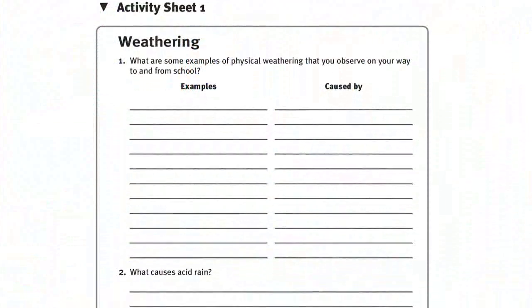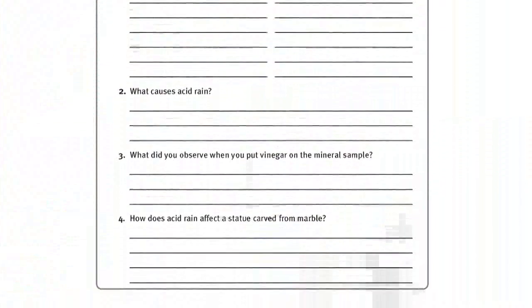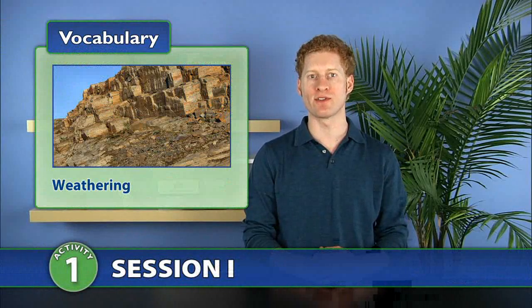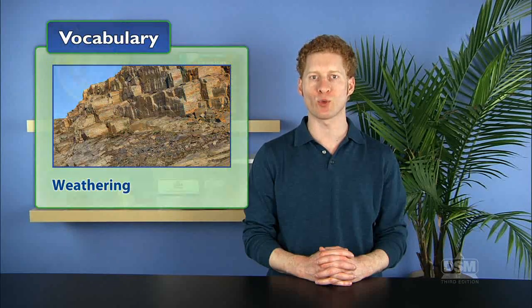To prepare for Session 1, make a copy of Activity Sheet 1 for each student. To begin Session 1, introduce the term weathering as the very slow process of breaking down rocks and minerals on the Earth's surface into smaller pieces. Go on to explain that there are two types of weathering: physical and chemical. Tell students that they will investigate physical weathering in Session 1 and chemical weathering in Session 2.